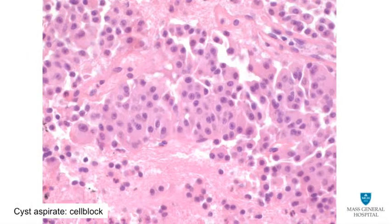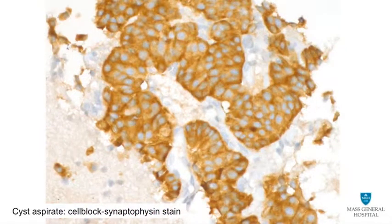The formalin-fixed paraffin-embedded cell block provides morphological evidence that supports the neuroendocrine differentiation of the tumor. In addition, this tissue provides readily available tumor for ancillary testing. Immunohistochemical stains for endocrine differentiation confirm the nature of the cells as endocrine in type. Strong, diffuse cytoplasmic staining of the tumor cells with synaptophysin is sufficient to support the diagnosis of a neuroendocrine tumor.